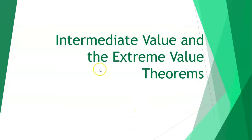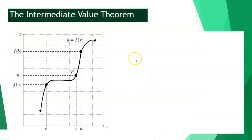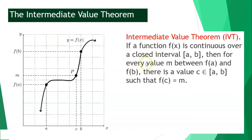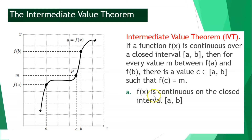Hello, everyone. In this video, we will learn all about the intermediate value and the extreme value theorems. The intermediate value theorem states that if a function is continuous over a closed interval a, b, then for every value m between f of a and f of b, there is a value of c which is within the interval from a to b, such that f of c is equal to m. So take note, f of x is continuous with the closed interval from a to b.